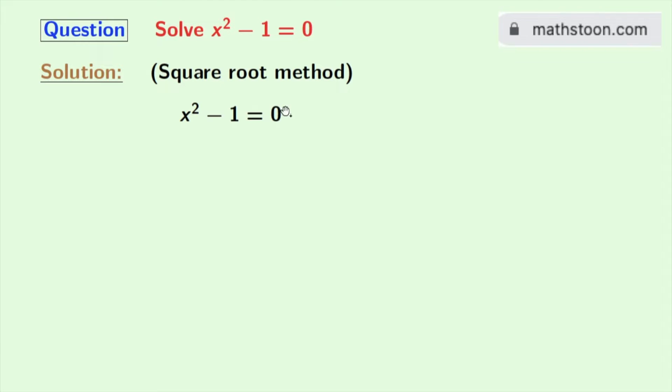Now this is our given equation. We will rewrite this as x² = 1. Now taking square roots on both sides, we get √(x²) = √1.